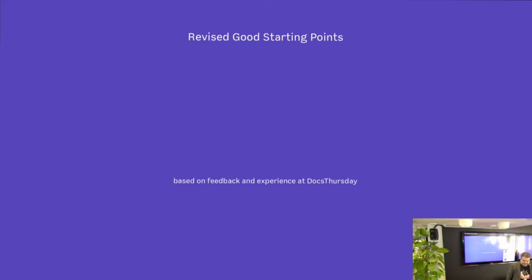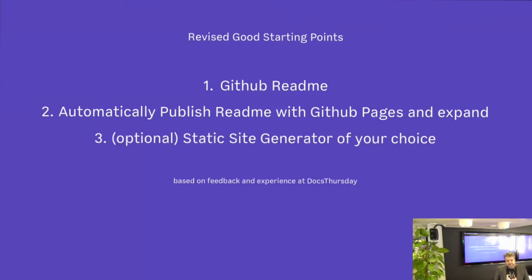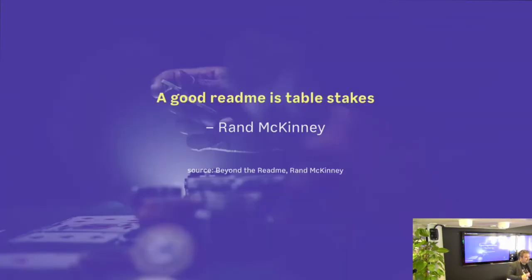So I revised these ideas — revised good starting points. The first is still the GitHub readme. The second, a step after you have the bare minimum of a readme, is to automatically publish the readme with GitHub Pages — it's super easy, you can literally just publish it as a website. Then you can expand with additional readme files in a docs directory. And optionally, a static site generator of your choice. We often jump to the static site generator trying to make it beautiful, but starting with the readme is a good way to flush out all the ideas first.